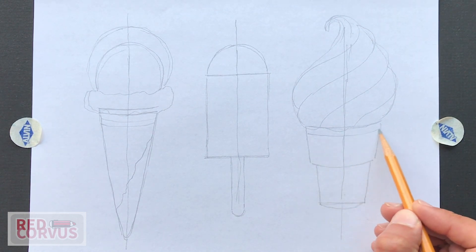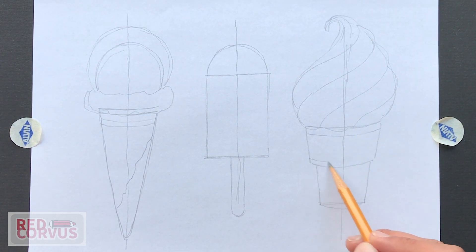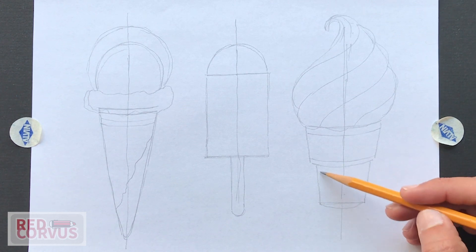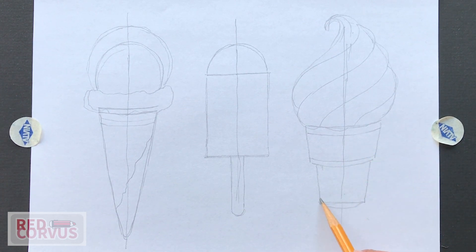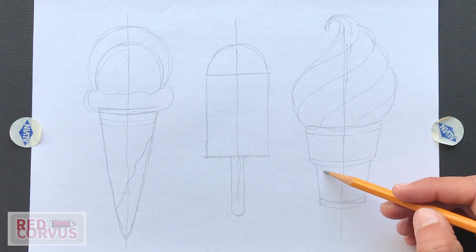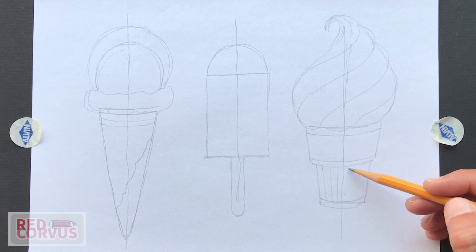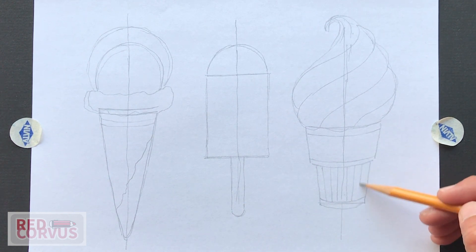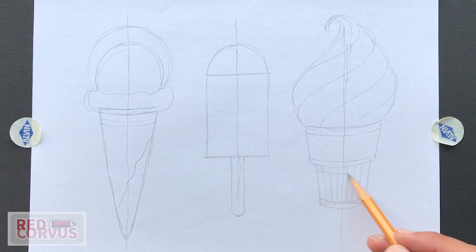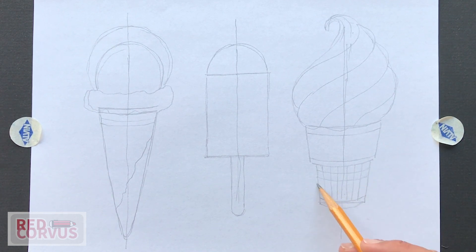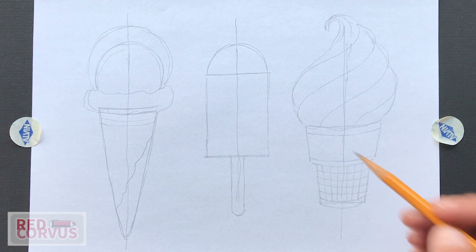Now for the design on the cup. At the bottom, I'm going to draw a grid. So vertical lines. And then horizontal lines. And because the shape of the cup is rounded, I'm going to draw the lines rounded too.